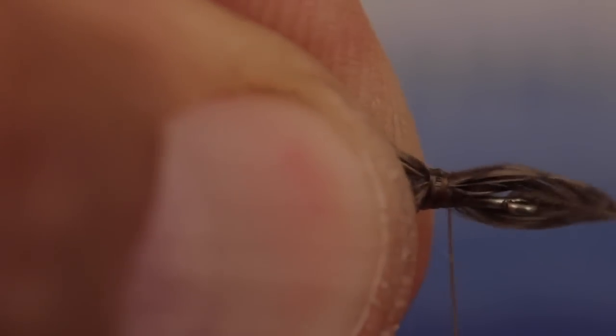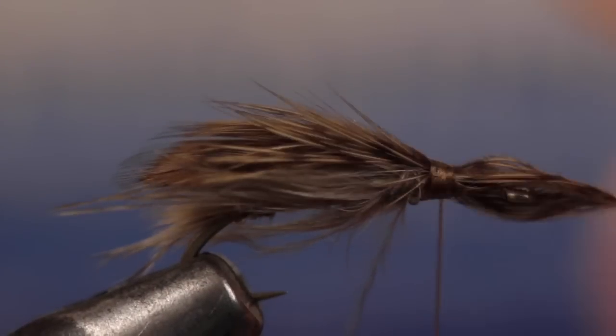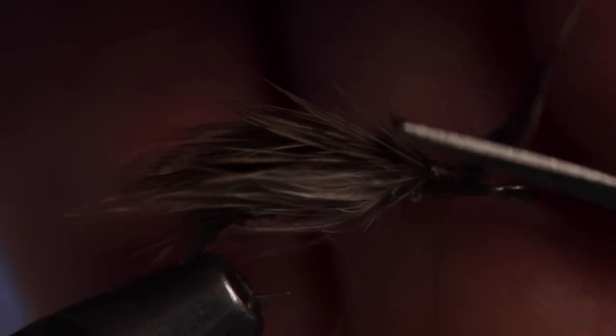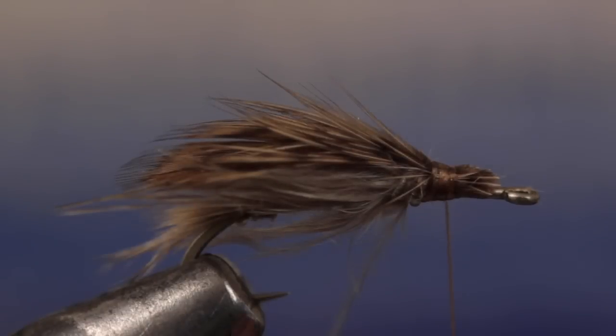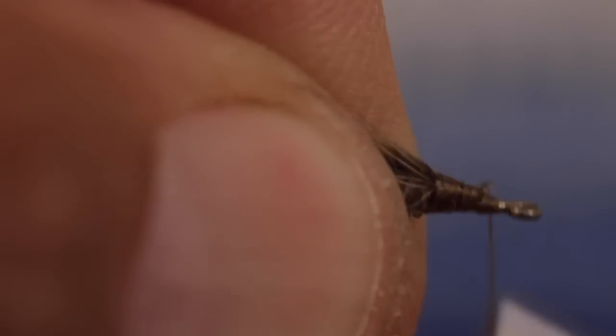Once you get it oriented correctly, take a few good thread wraps to keep it that way. You can then lift the excess butt end up and snip it off at an angle. Take thread wraps to cover the butts up and form a smooth thread ramp down to the hook shank.